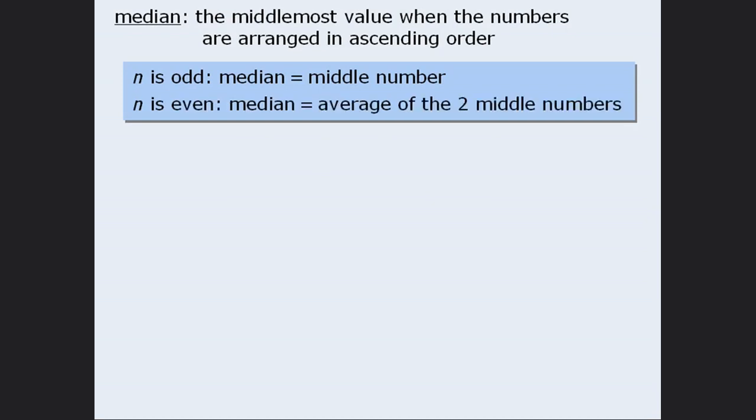When there is an even number of values, the median is the average of the two middle values. Let's look at some examples.